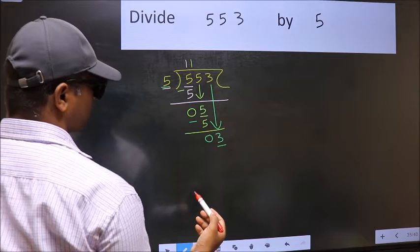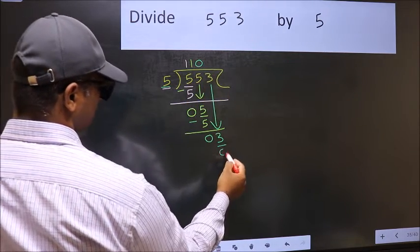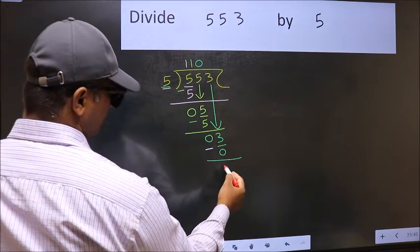So what we should do is we should take 0. So 5 into 0, 0. Now you should subtract. 3 minus 0, 3.